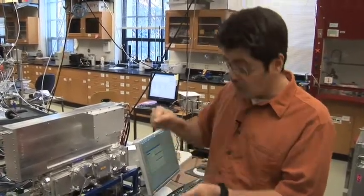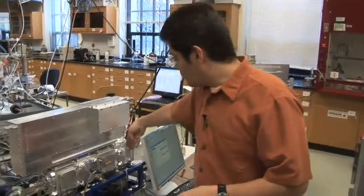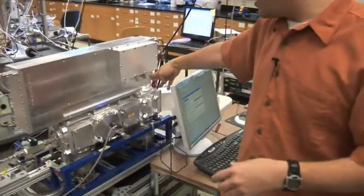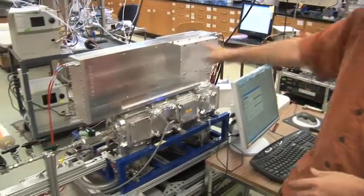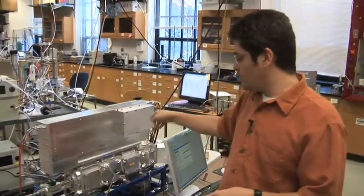Once we have ions, we can basically just steer them with these electric fields. So what we do is we steer them into here, and then we make them fly like this in this box. This is called the mass spectrometer, so they fly like this. And then we finally detect them.